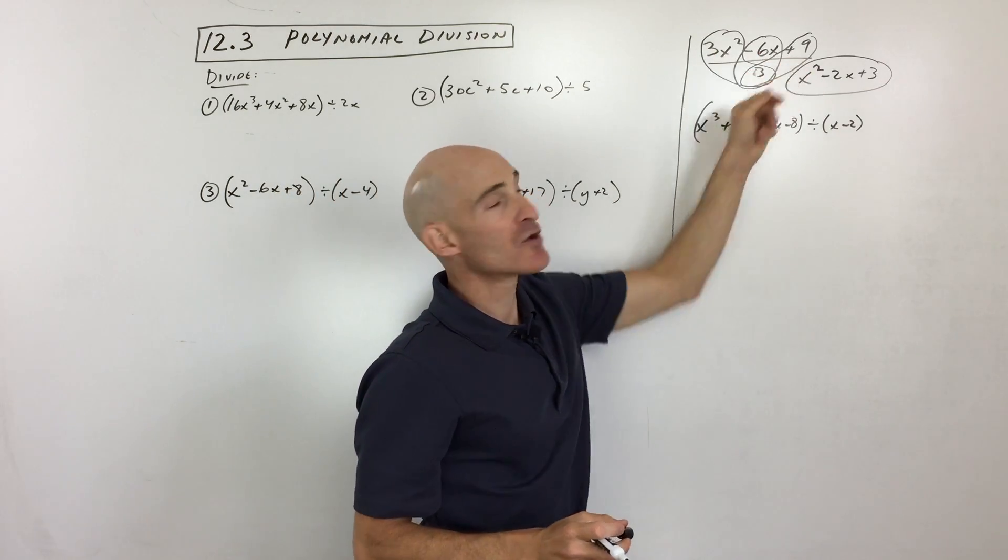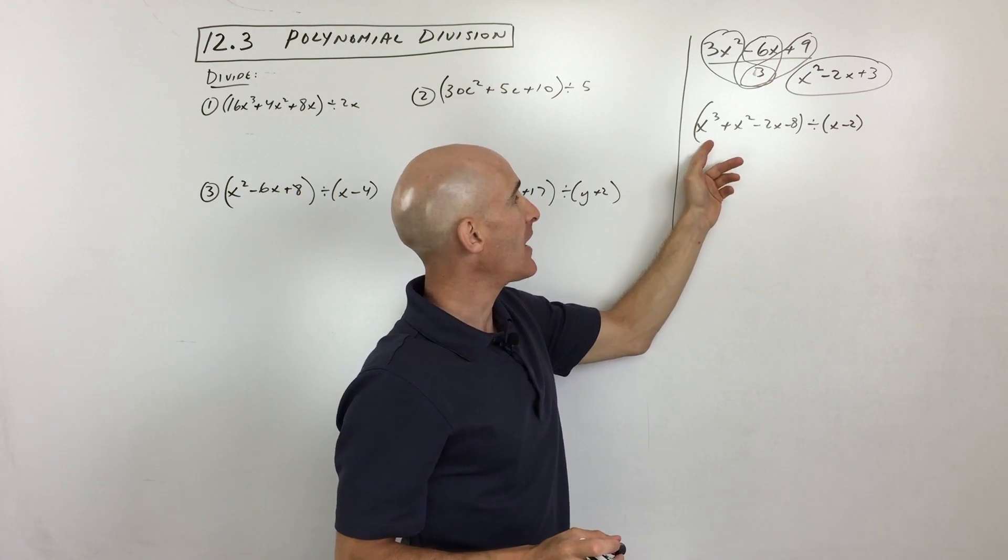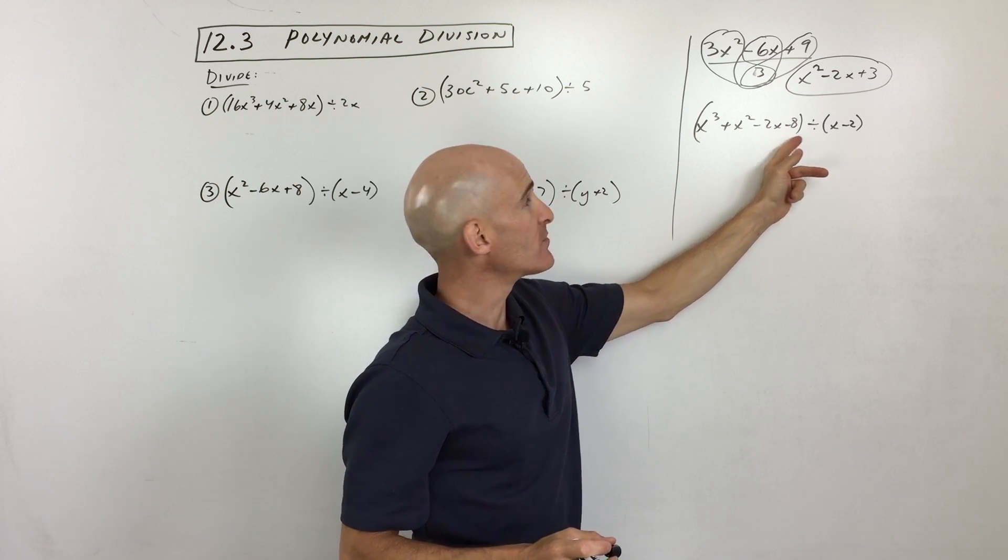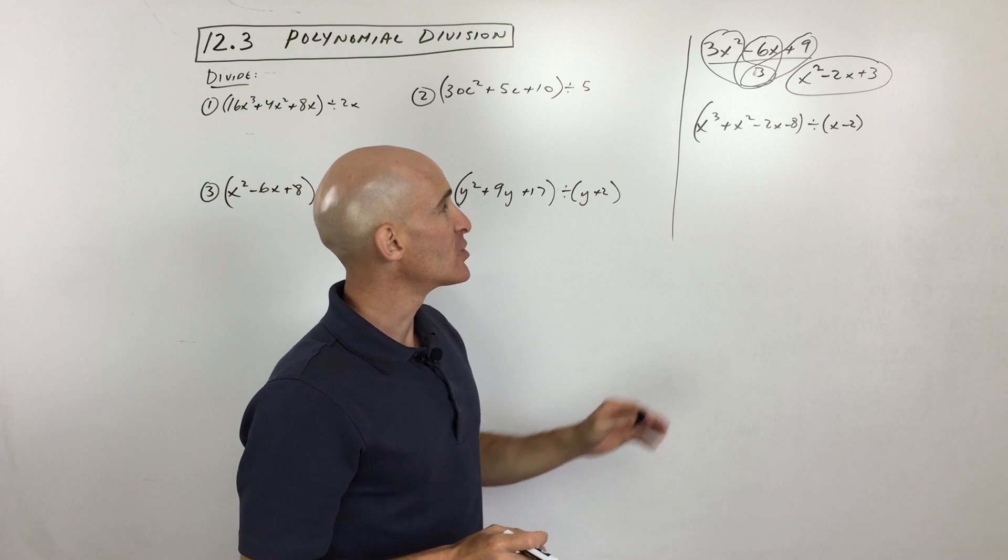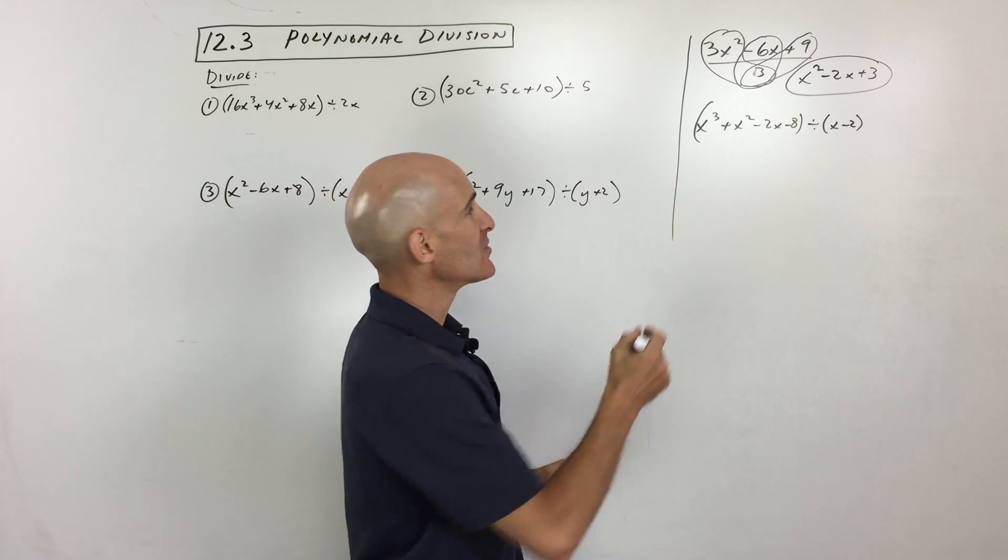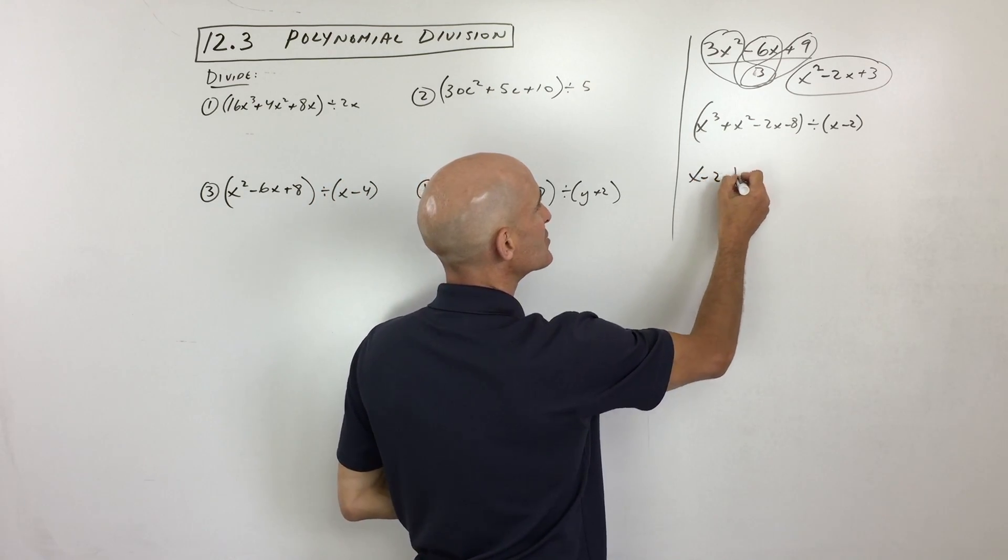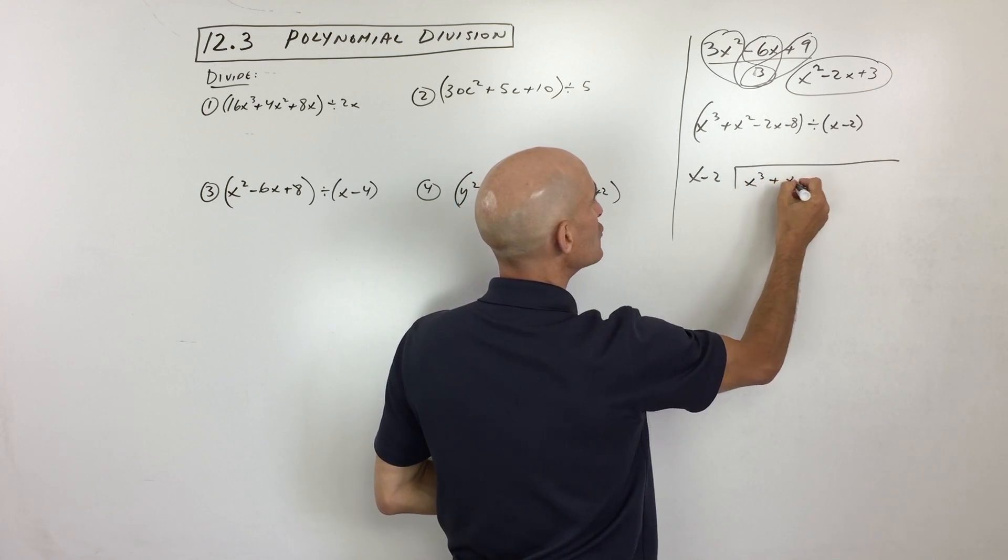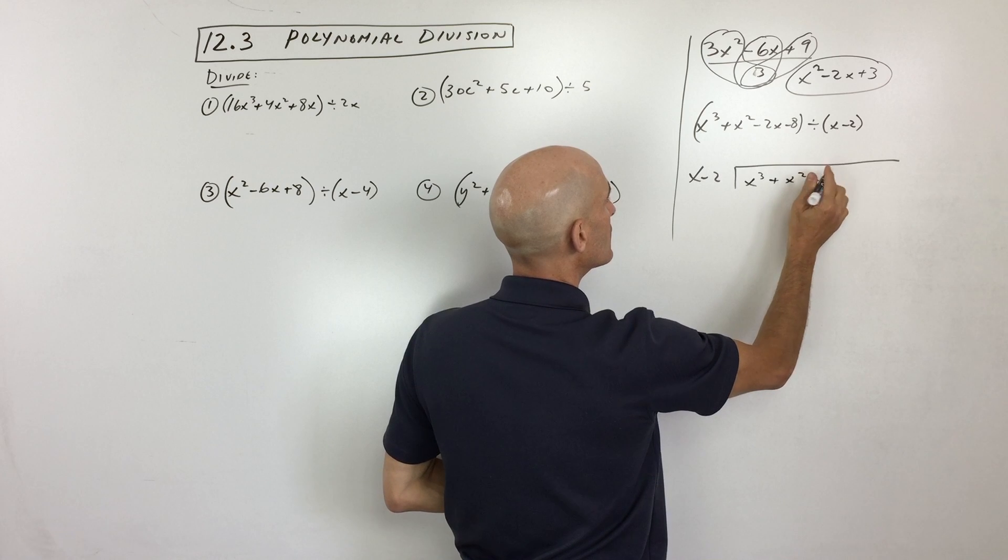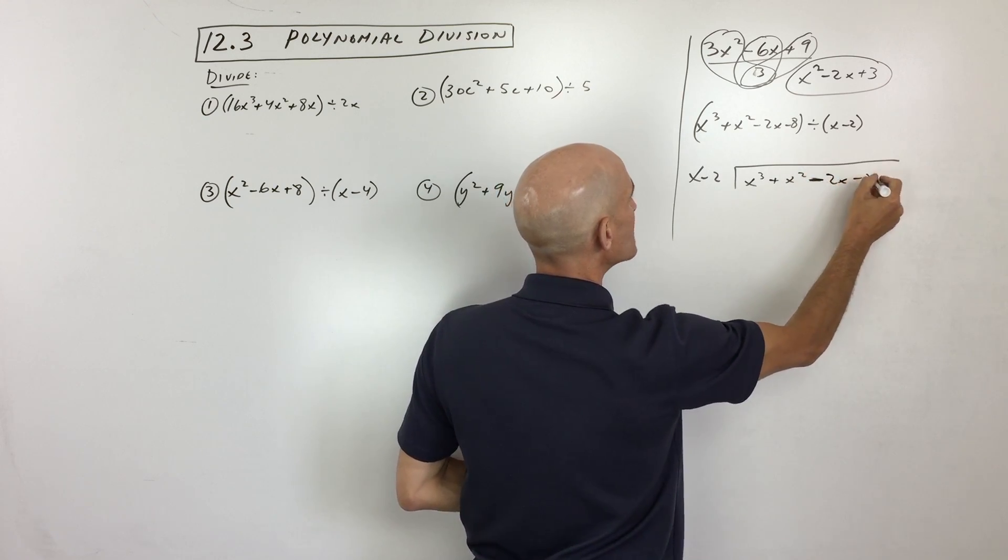You just divide each of the terms by that monomial. Now here we've got a polynomial with four terms divided by a binomial, binomial meaning two terms. So what we're going to do here is we're going to do the polynomial long division that I mentioned. So we're going to take x minus 2, and we're going to see how many times it goes into x cubed plus x squared minus 2x minus 8.